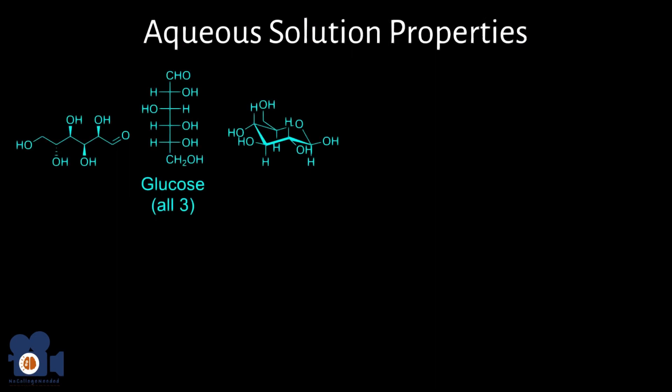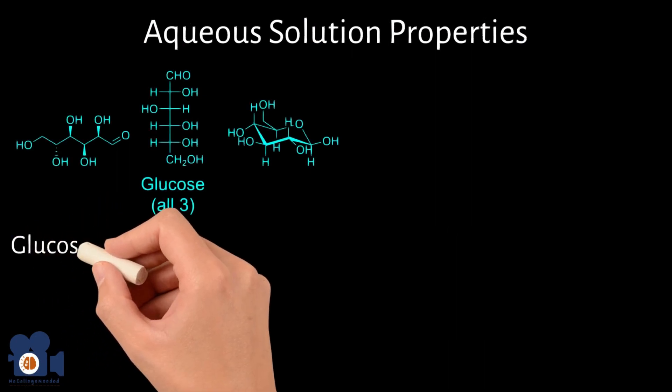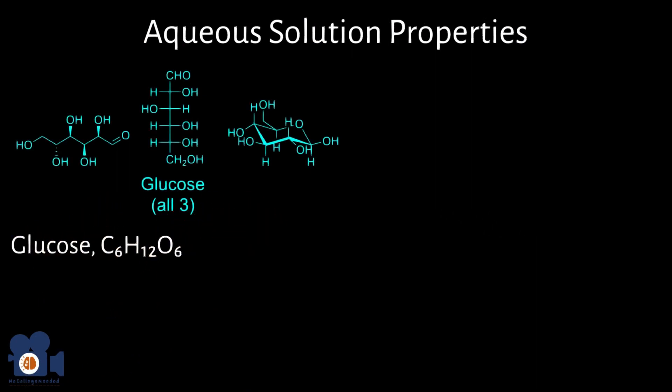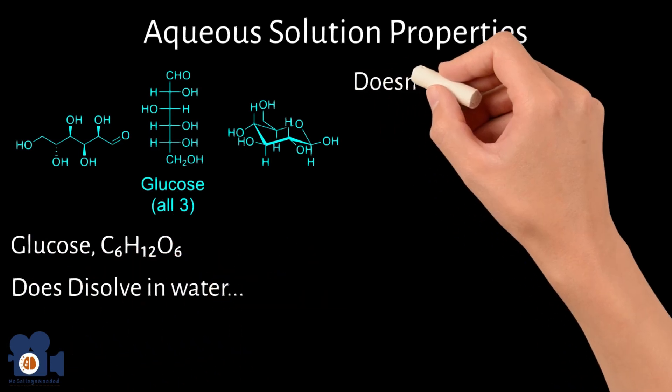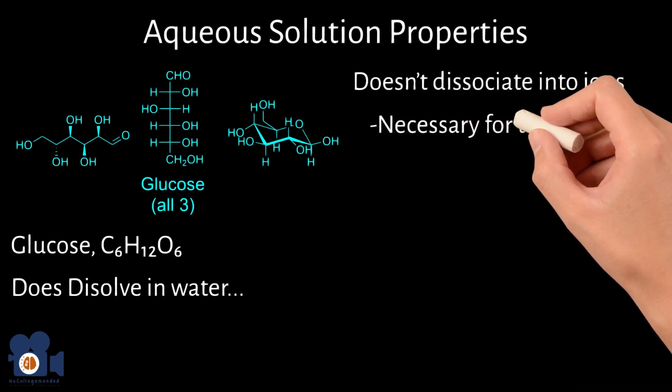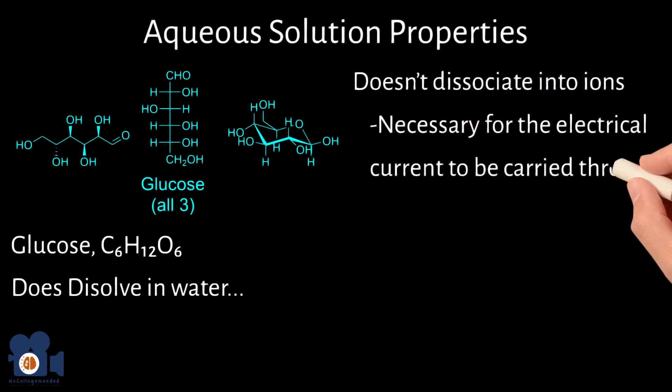But what about the other solutes? Can they conduct electricity? Let's look at the example of sugar's glucose, C6H12O6. When this molecule is dissolved in water, it does not conduct electricity. This is because it doesn't dissociate into ions, which are necessary for the electrical current to be carried through the water. These are called non-electrolytes.